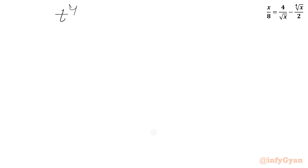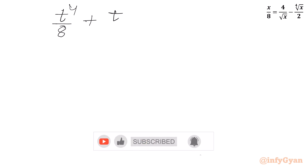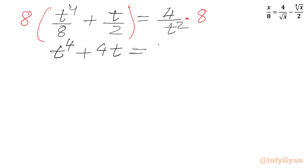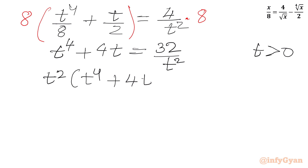The equation is t⁴ over 8 plus t over 2 equal to 4 over t squared. Multiplying both sides by 8 clears the denominators, giving t⁴ plus 4t equal to 32 over t squared. Since t is positive we can cross multiply, giving t squared times (t⁴ plus 4t) equal to 32. Expanding the left-hand side gives t⁶ plus 4t³ equal to 32.